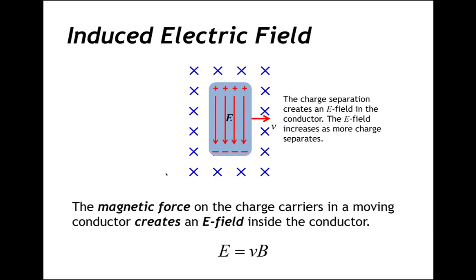The magnetic force on the charge carriers in a moving conductor creates or induces an electric field inside the conductor. Now that we've established what the induced electric field is, let's find the potential difference between the charges in this conductor moving in the magnetic field, because this induced electric field means that there is a difference in potential between various points along the electric field.